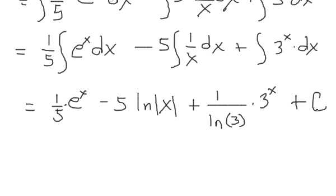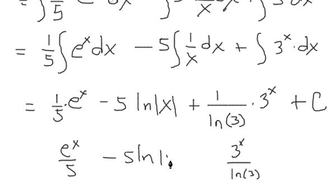Don't forget the plus C. You could rewrite this piece as 3^x over the natural log of 3 if you'd like. This could be rewritten as e^x/5 minus 5 times the natural log of the absolute value of x plus 3^x/ln(3) plus C.